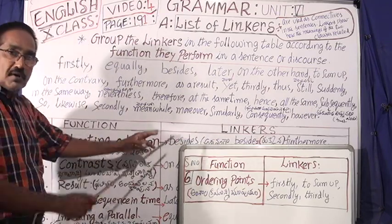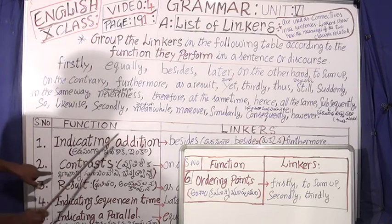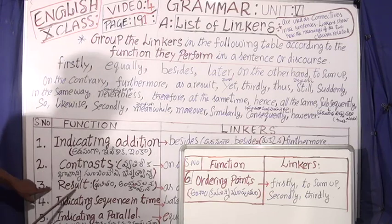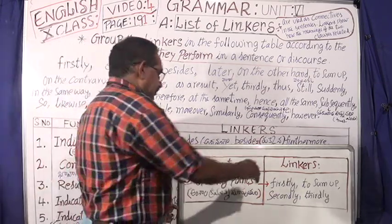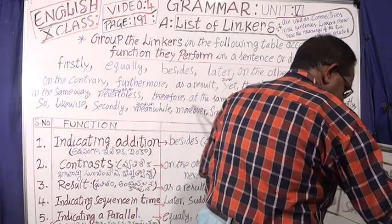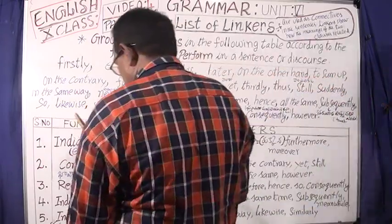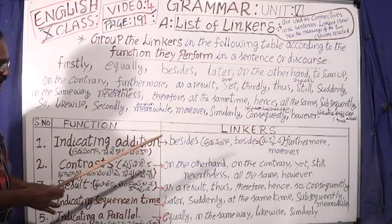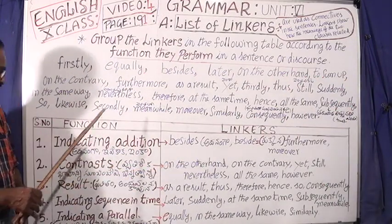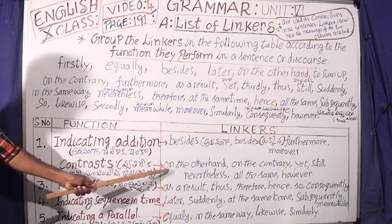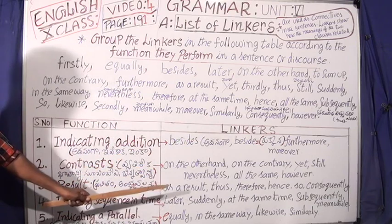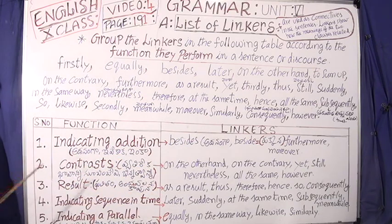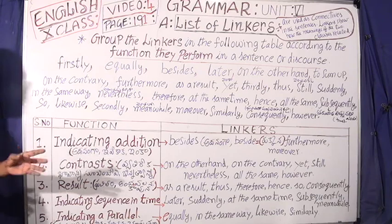Such as indicating addition, contrast, results, and indicating the sequence in time, and the ordering points. We have arranged six types of items. What is indicating addition, what is contrast, what is the result, what is the sequence, what is parallel, what is the ordering points — this is very important.